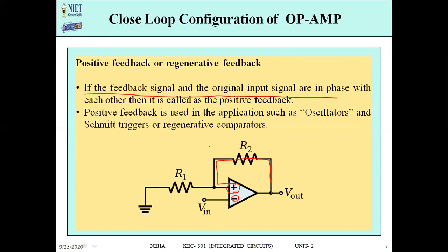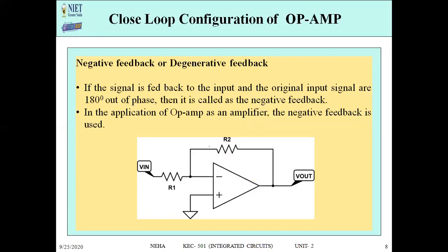Positive feedback is used in oscillators, Schmitt triggers, and comparators. Negative feedback occurs when the output terminal is connected to the inverting (negative) terminal of the op-amp. When the output is fed back to the negative terminal, it is known as negative feedback.